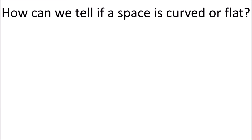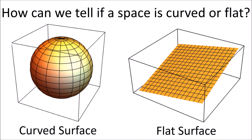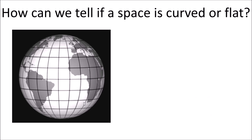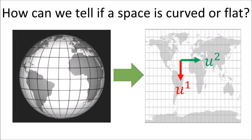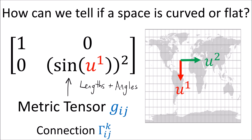The main question we want to answer is: how can we tell if a space is curved or flat? You might think this is easy to answer just by using our eyes — clearly a sphere is curved and a plane is flat. But in math we don't always have the luxury of visualizing a space. Instead, all we have are a coordinate system and a metric tensor matrix, which measures lengths and angles. So we need a mathematical procedure using the metric tensor, and we can also use the connection coefficients, since they are calculated from the derivatives of the metric tensor.